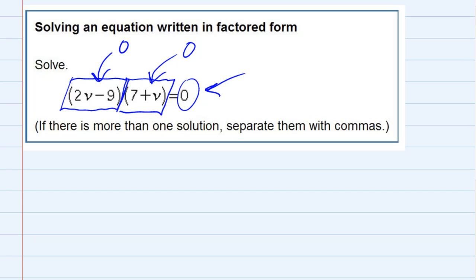Let's take the first one first. It says 2v minus nine. One way that this equation would work would be if that is zero. So if I were solving that, I would add the nine over to the other side. Remember we're trying to get the v by itself. That gives me 2v equals a positive nine.